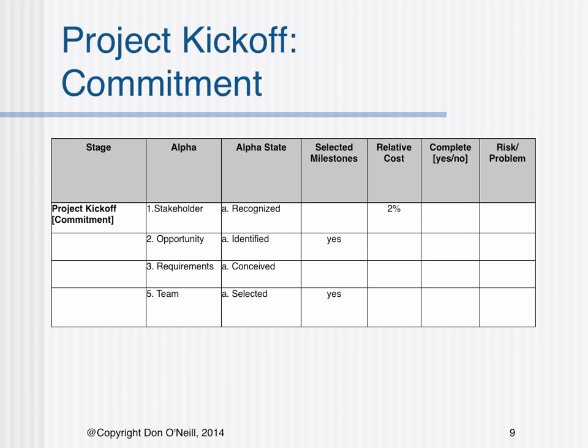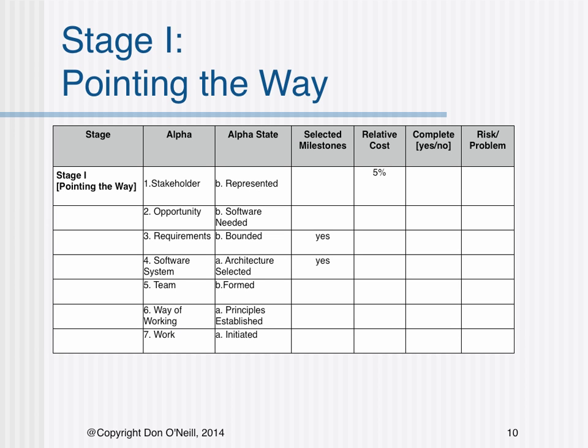The project kickoff is intended to initiate commitment among stakeholders to the opportunity identified and the conception of requirements. In addition, a team is selected. Chief among these is identifying the opportunity and team selection. Stage 1 is intended to point the way forward. Here, individual stakeholder personnel are identified, the opportunity involves software, requirements are somewhat bounded, and the software system architecture concept is selected. The team has been formed and has established a way of working, and work has been initiated. The critical selected milestones revolve around bounded requirements and architecture selection.